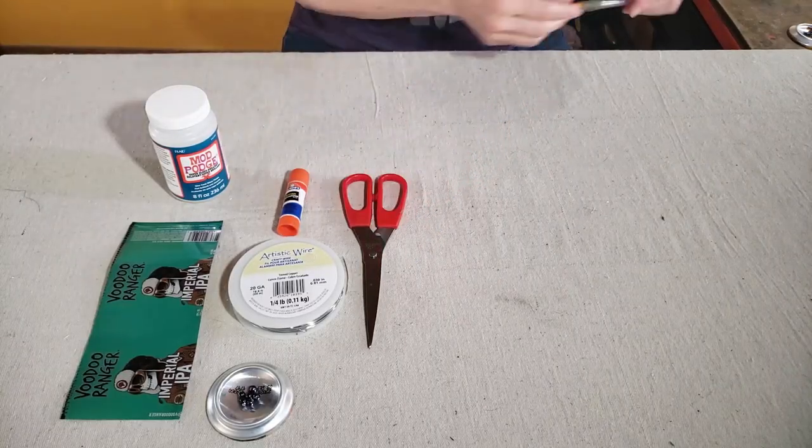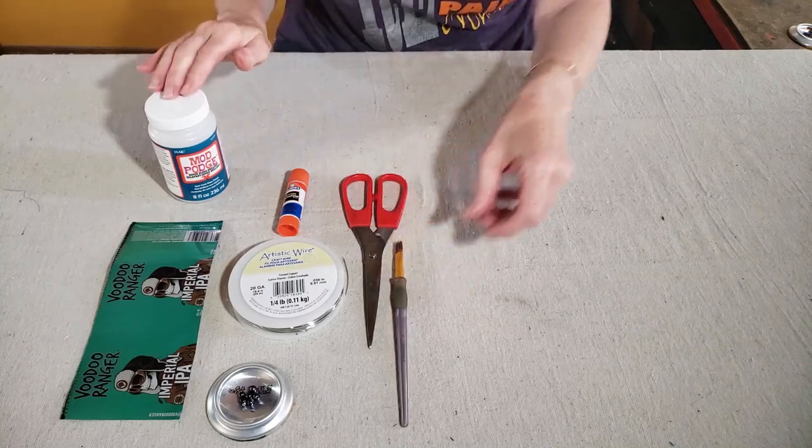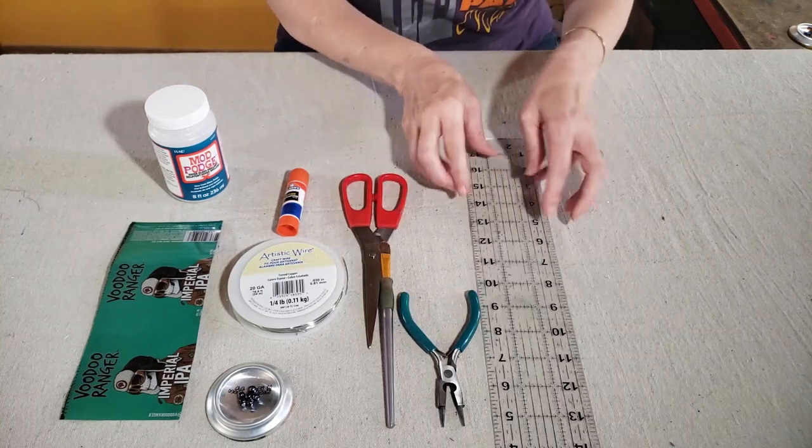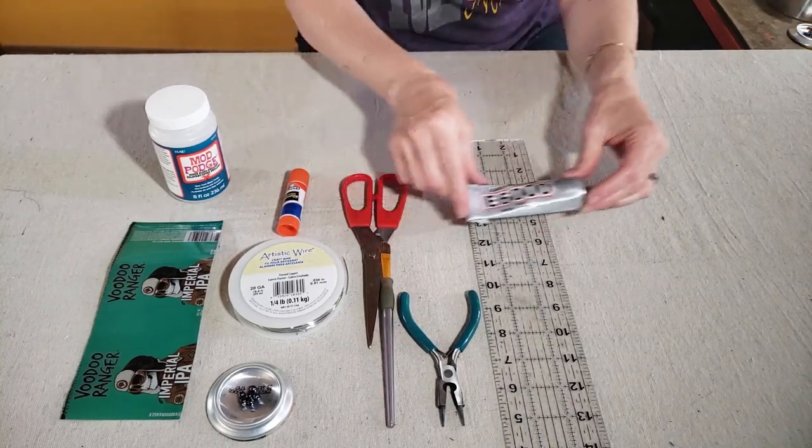You need a glue stick, a pair of craft scissors. You're going to want a small brush to apply the Mod Podge. Some round tipped jewelry pliers. A ruler.